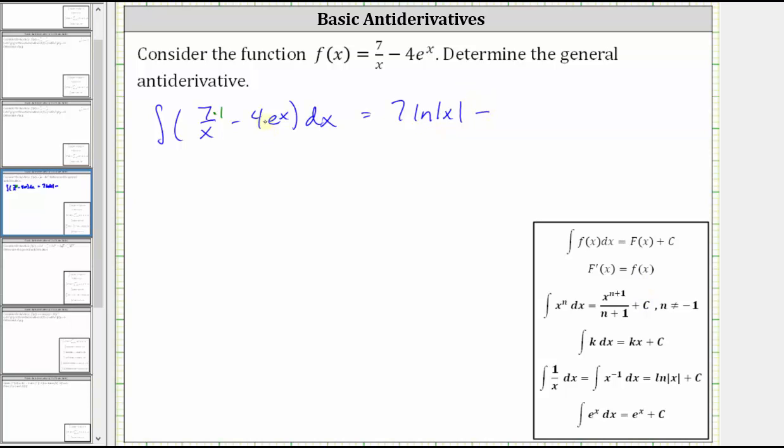And then we have minus the integral of four times E to the power of X, which is equal to four times the integral of E to the X. And the integral of E to the X is equal to E to the X plus C, and therefore we have minus four E to the X and then plus C.